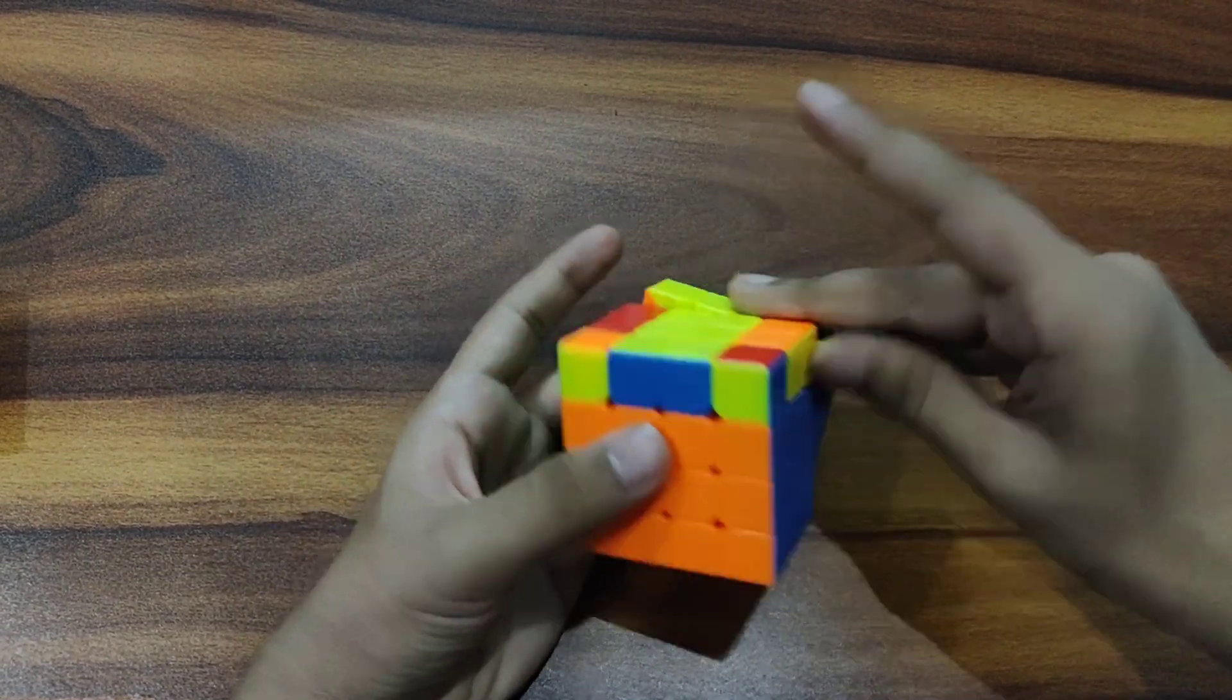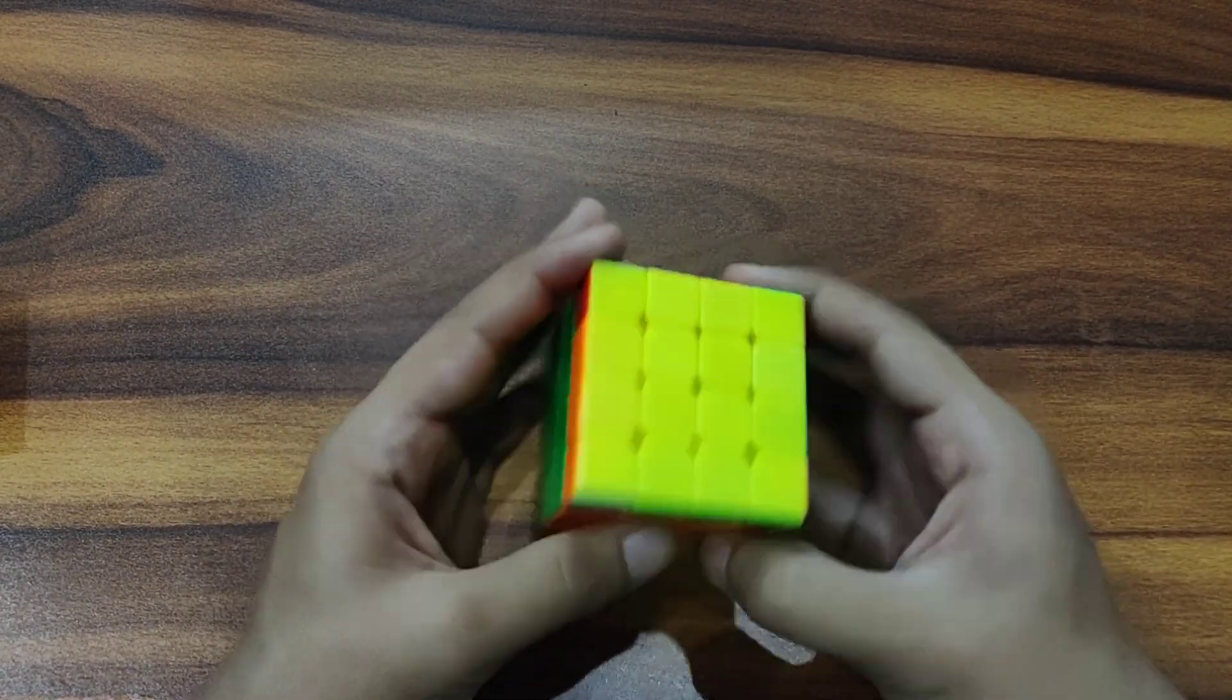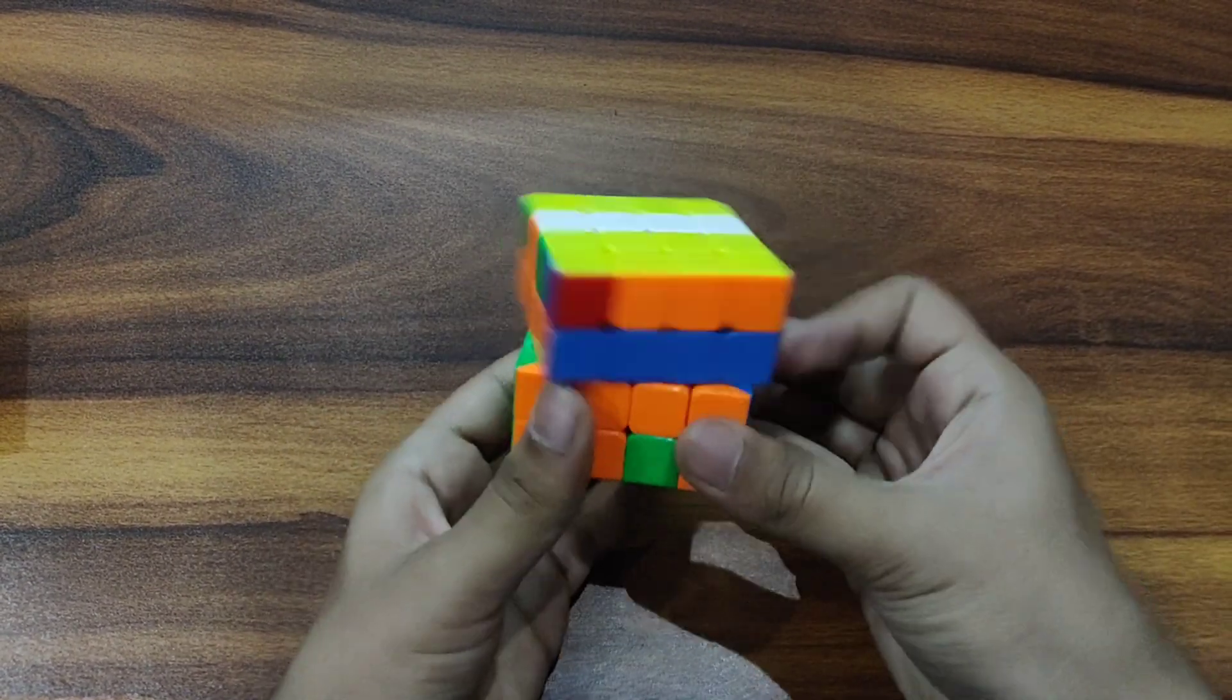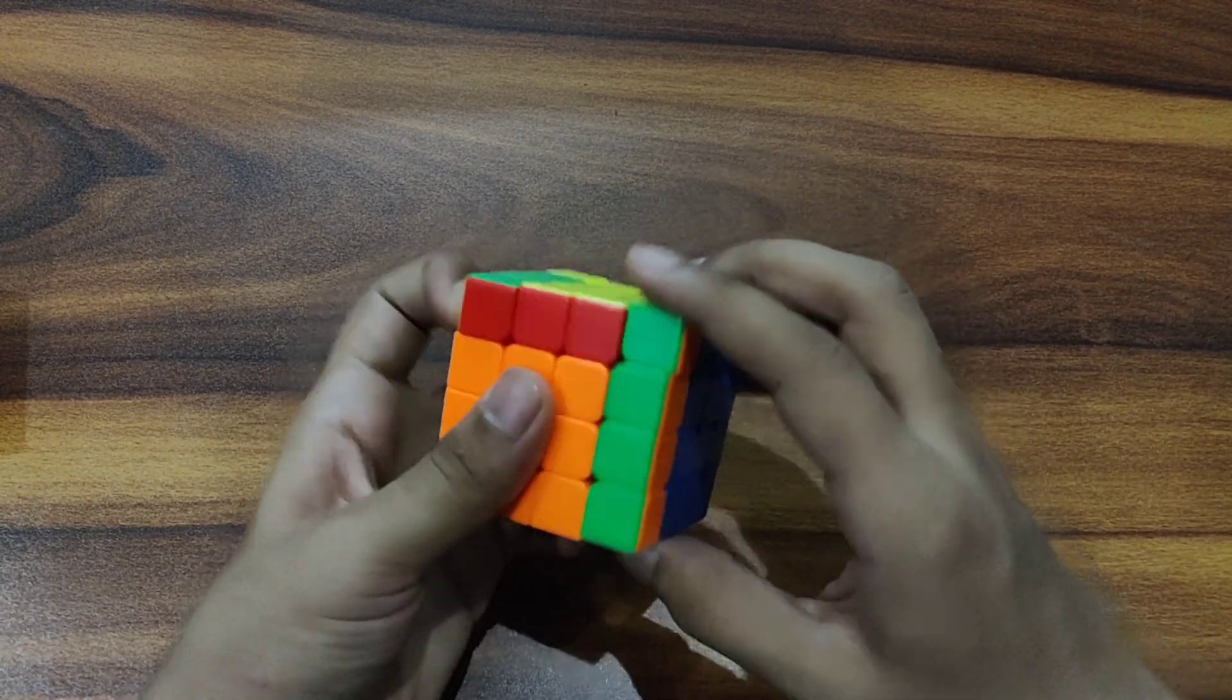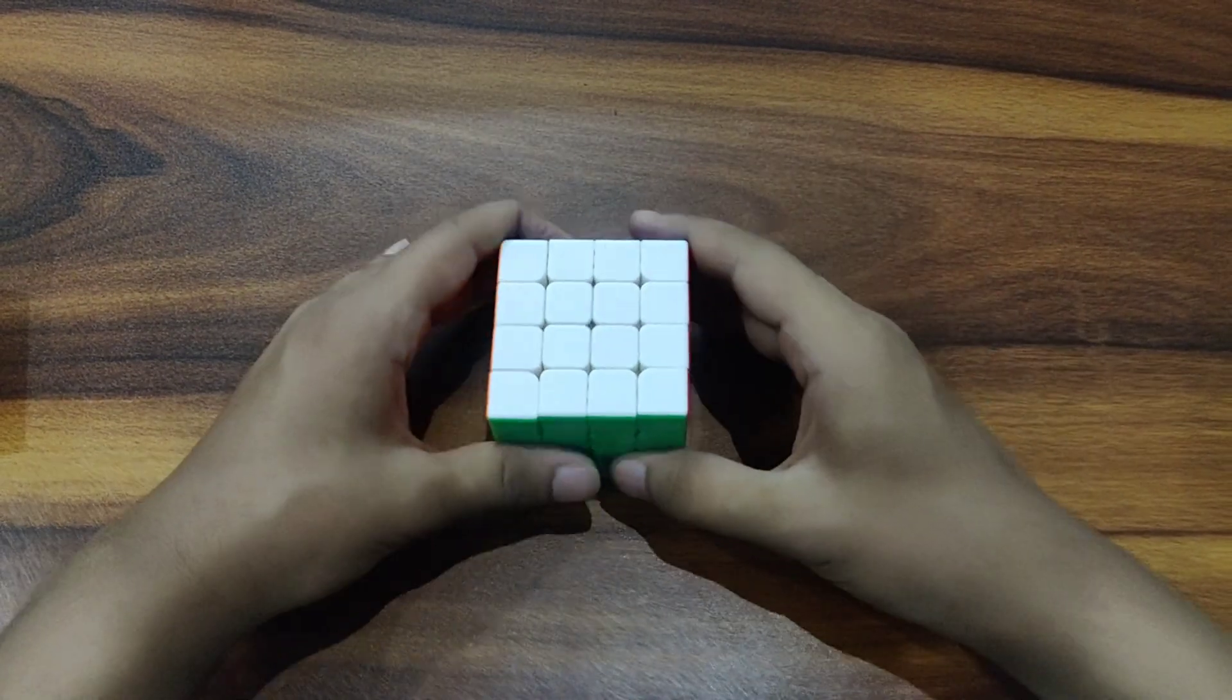So now it's basically the last layer of three by three, but you can get OLL and PLL parity. We have here the PLL parity. Now the Y perm and the cube is solved.